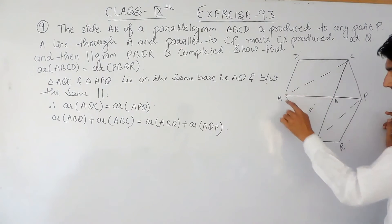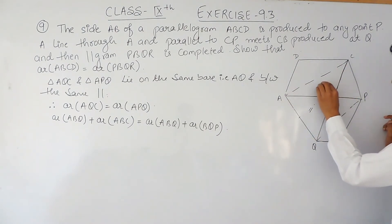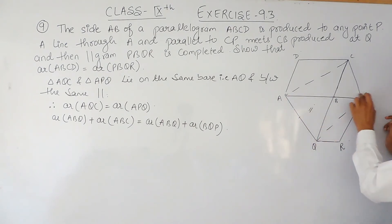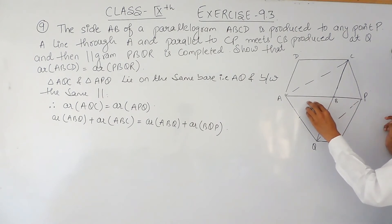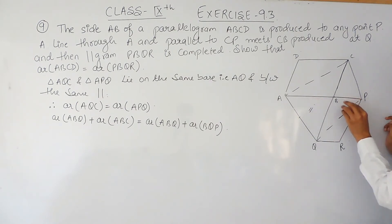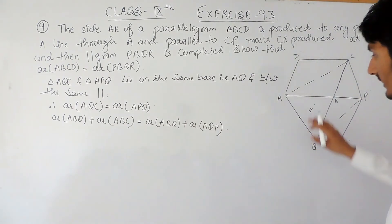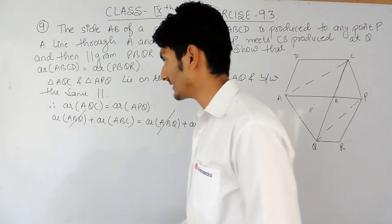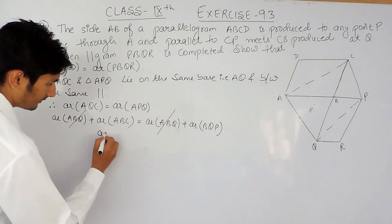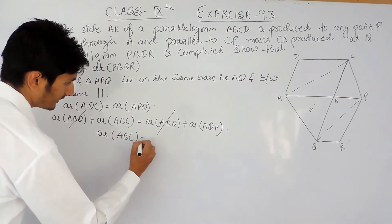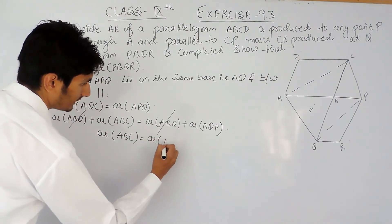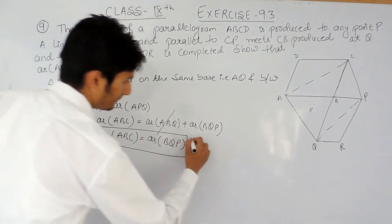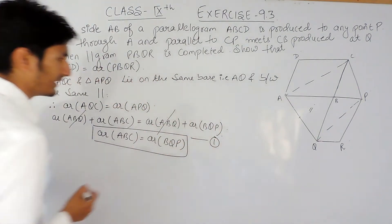Triangle ACQ is divided into two parts: ABC plus AQB. Similarly, triangle AQP is divided into AQB and BPQ. Both have the same common part AQB, so it can be cancelled from both sides. Therefore, area of triangle ABC equals area of triangle BQP. This is our first equation.